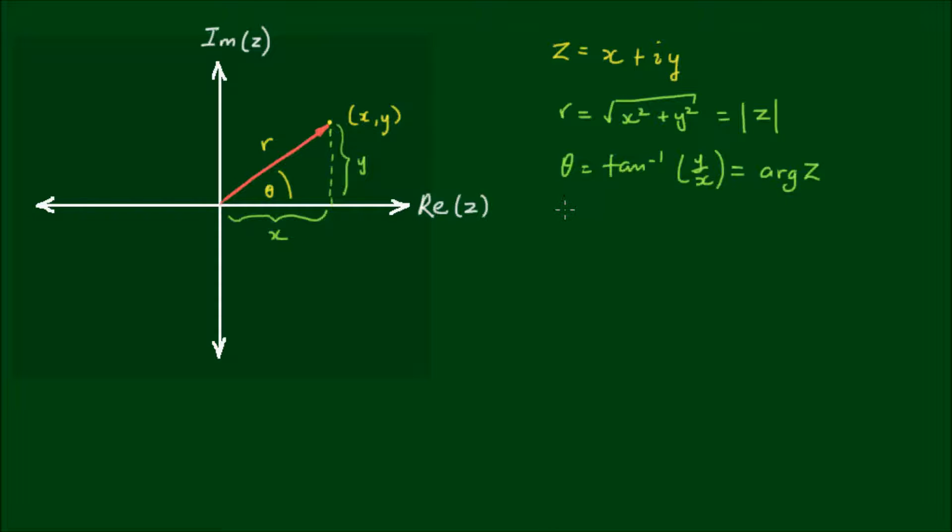And also by trigonometry, the horizontal component is simply equal to r cos θ. And the vertical component y is equal to r sin θ.